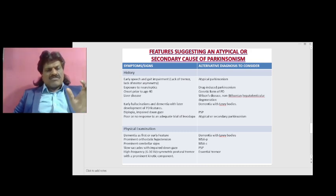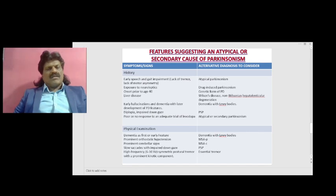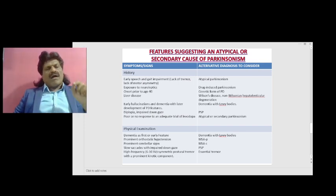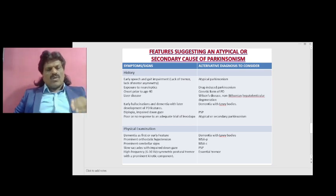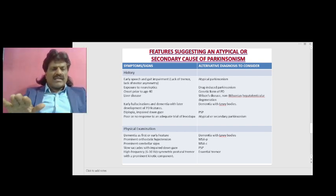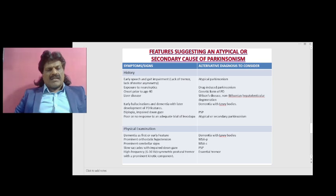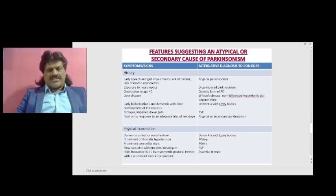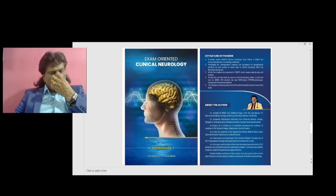On examination, features suggesting an alternative diagnosis: dementia as a first or early feature suggests dementia with Lewy body disease. Prominent orthostatic hypotension suggests multiple system atrophy Parkinson type. Prominent cerebellar signs suggest MSA cerebellar type. Slow saccades with impaired downward gaze suggest progressive supranuclear palsy. High-frequency 6 to 10 Hz symmetric postural tremor with a prominent kinetic component suggests essential tremor.